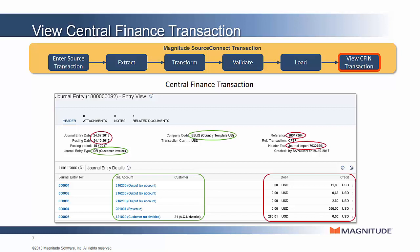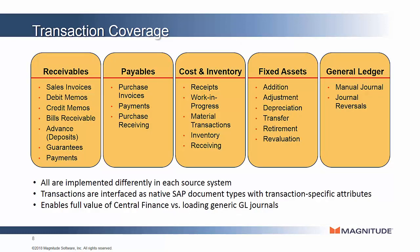Secondly, because it is a customer invoice, if you want to take that next step into shared services and apply cash against this invoice, you can do so. This detailed interface is true for several dozen transaction types that SourceConnect Transaction covers. To gain the most value out of Central Finance and the deepest level of reporting and enablement for shared services, you want to make sure that you're interfacing at this detail level versus a generic GL journal upload.